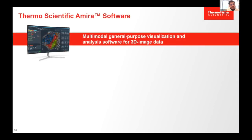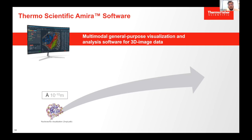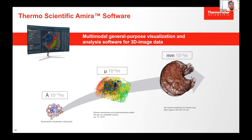Amira software is not only for electron microscopy — all tools and features are available for different data types: small molecules, single cells, tissues, whole organs or organisms. We work daily with EM data, light microscopy data, and X-ray microscopy data. If you're doing correlative research you can handle all the different modalities you might use. Thank you for your attention; I'm happy to take any questions.